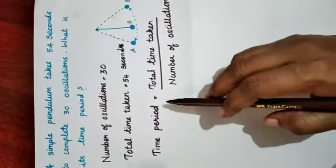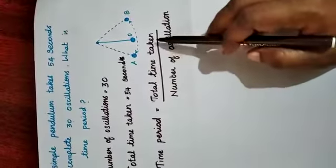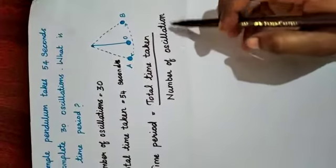Time period is equal to total time taken divided by number of oscillations.